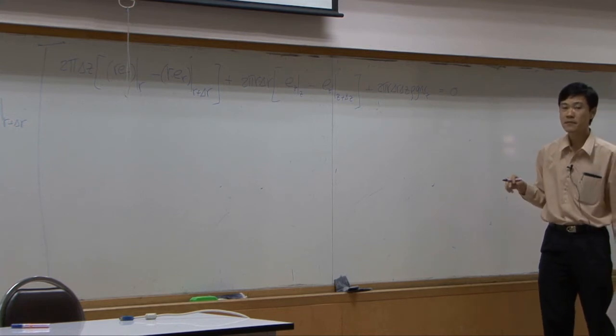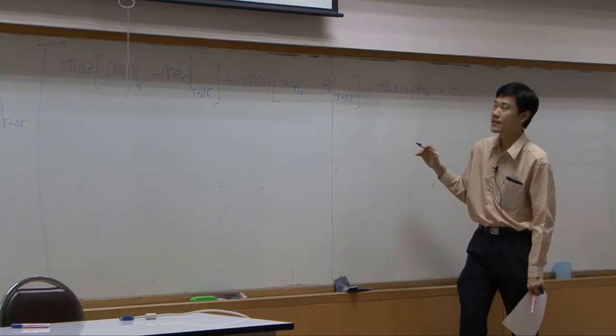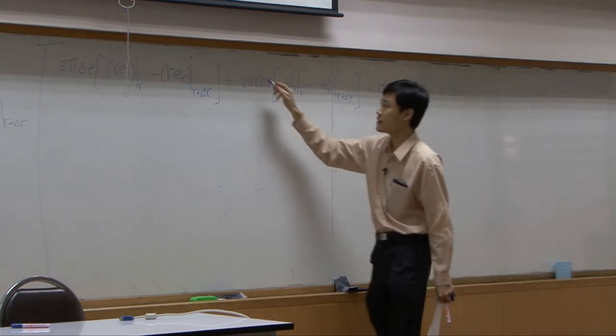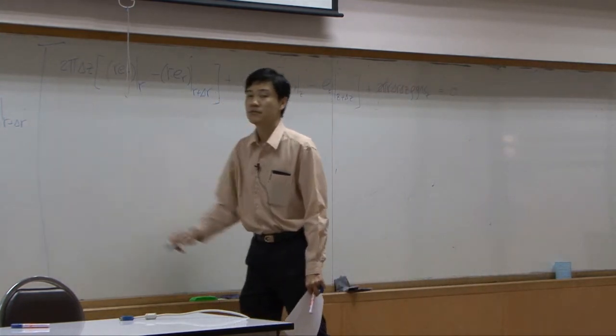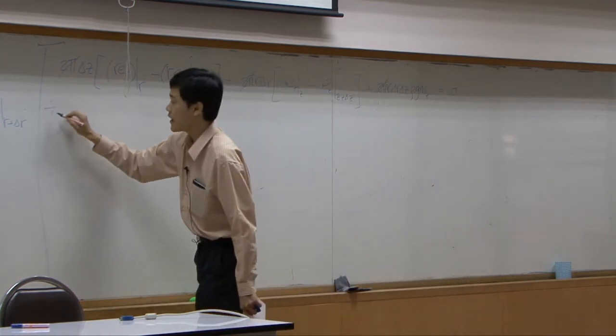All right, so once you set everything up into a shared balance, we can just drop 2pi all over, divide the whole thing by delta r delta z.